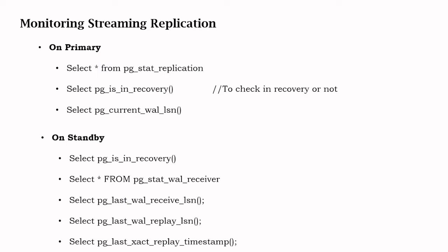On the standby server — as seen in the architecture diagram — we have the WAL receiver. You can use select pg_last_wal_receive_lsn() to see what WAL was last received from the primary, and use pg_last_wal_replay_lsn() to check what WAL has been applied, which will show the LSN number.